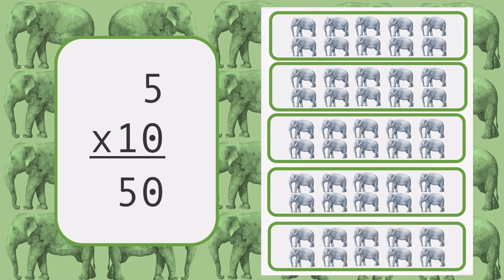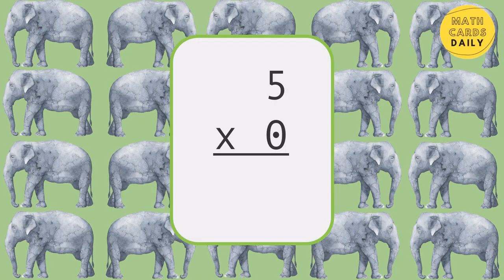There are 5 groups of 10. 5 times 10 is equal to 50.